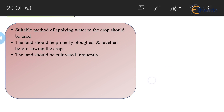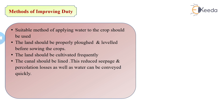The land should be cultivated frequently. Also, the canal should be properly lined. If the canal is not lined, seepage and percolation losses occur through the banks and side channels. If the canal is properly lined, it reduces seepage and percolation losses and water can be conveyed quickly, so inflow is equal to outflow and the discharge supplied to the agricultural plot remains constant.